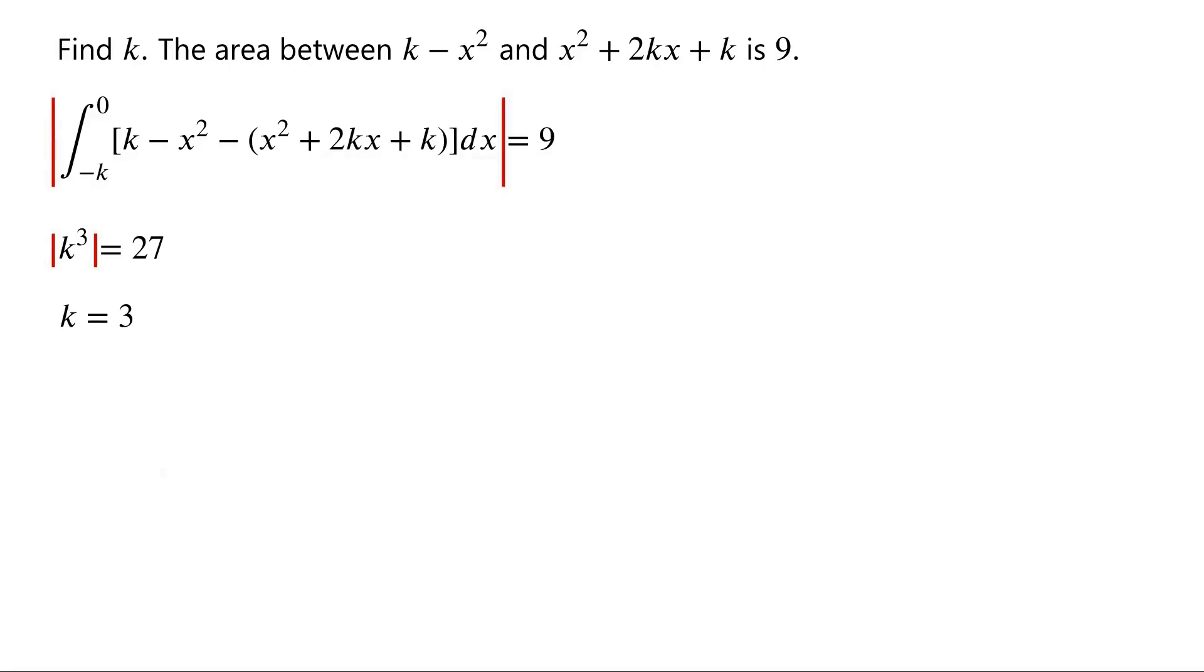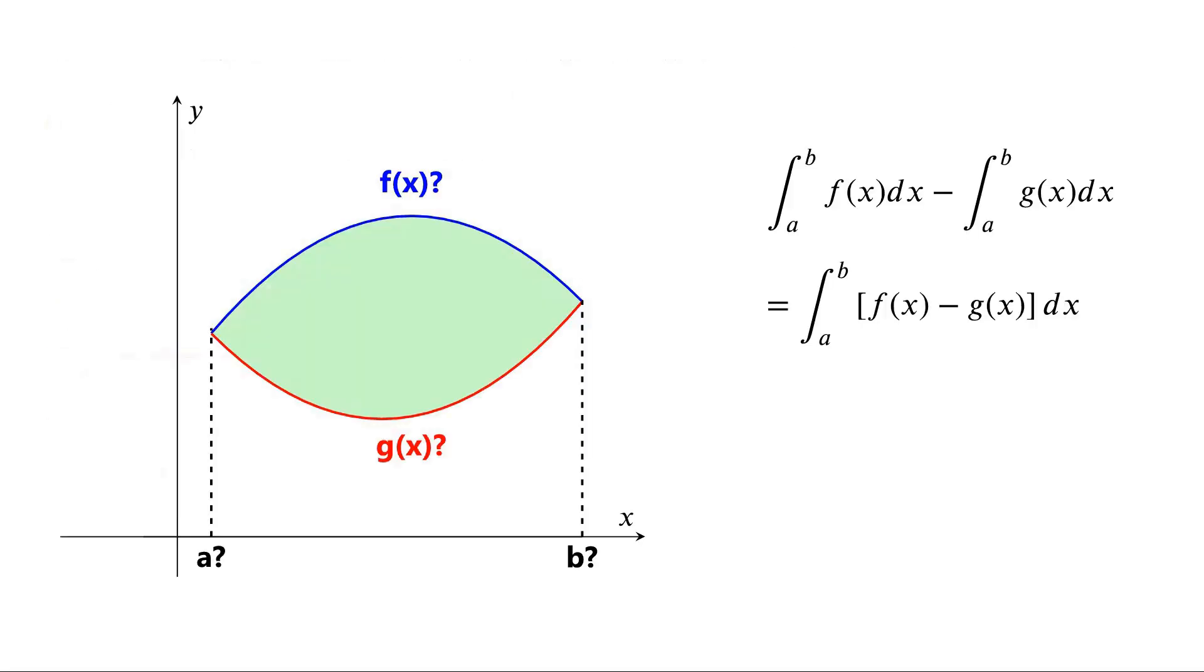Take the cube root of both sides, we have modulus of k equals 3. This means the complete set of solutions is k equals 3 and k equals minus 3. To avoid missing solutions, when you are unsure which function is on top or what the correct order of the limits is, you can take the absolute value of their difference.